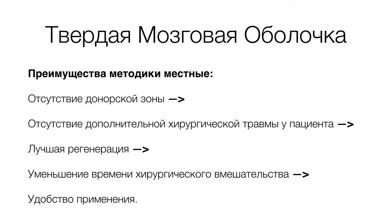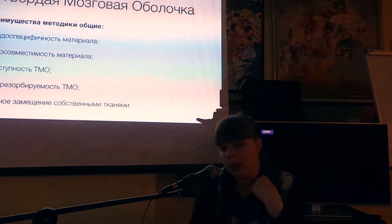Фиксация твёрдой мозговой оболочки не требует специальных навыков — она фиксируется обычными узловыми швами. В случае устранения рецессии — к деэпителизированным анатомическим межзубным сосочкам; при вестибулопластике — прижимается к поверхности гребня надкостничным лоскутом крестообразными матрасными швами.